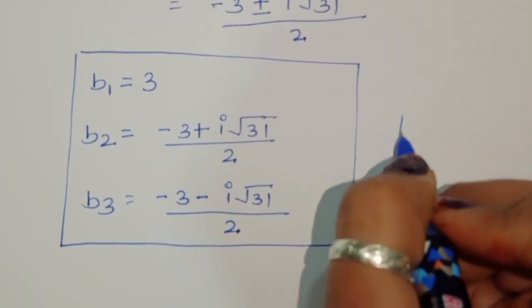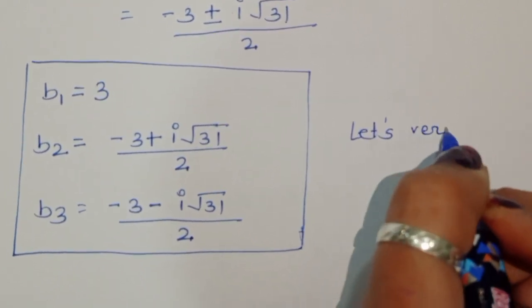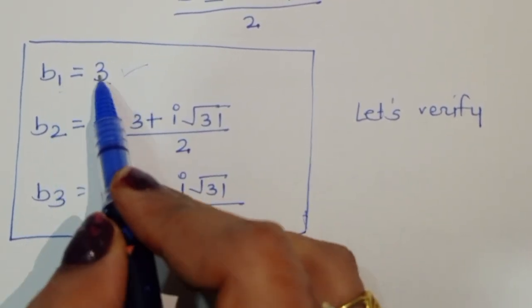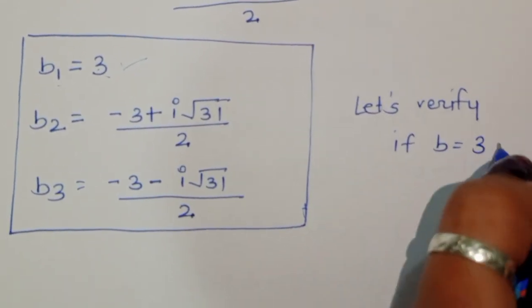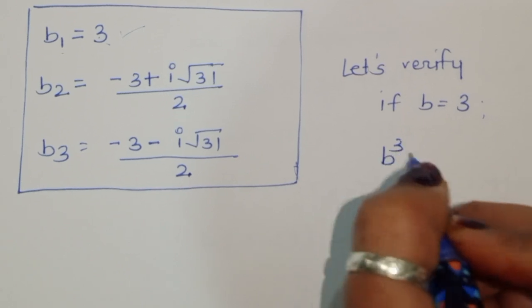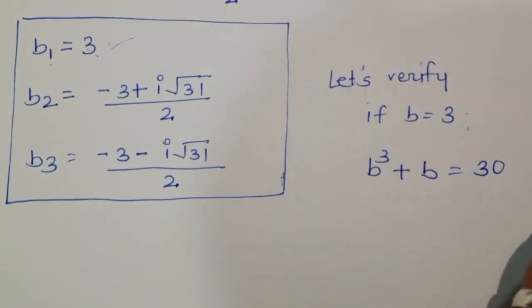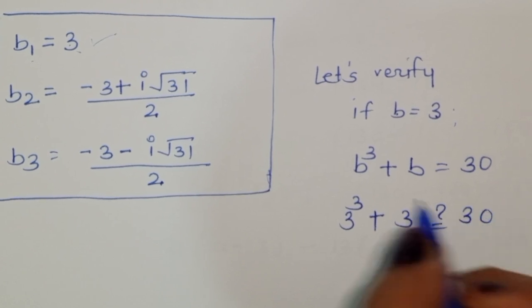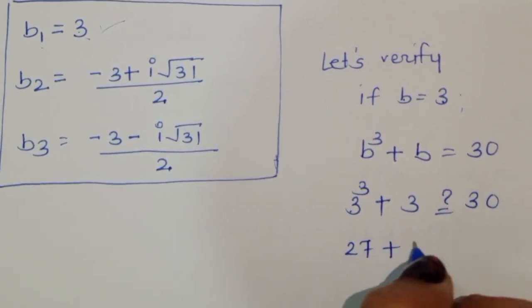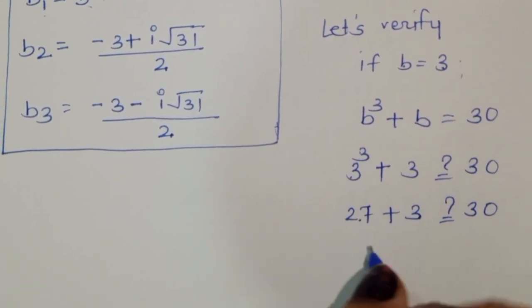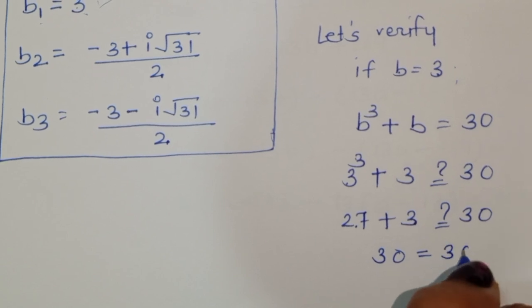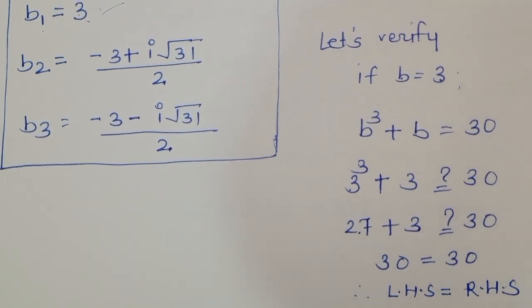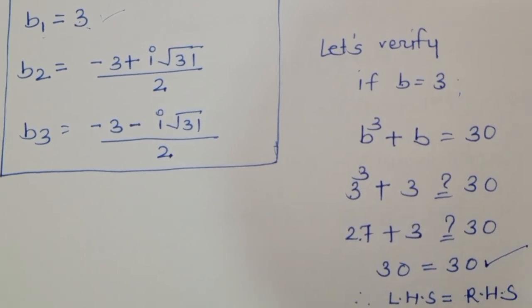Now let's verify. b₂ and b₃ are imaginary solutions. For the real solution, b₁ = 3. If b = 3, then b³ + b = 3³ + 3 = 27 + 3 = 30, which equals 30. Therefore LHS is equal to RHS, so b = 3 is the correct solution. Thank you.